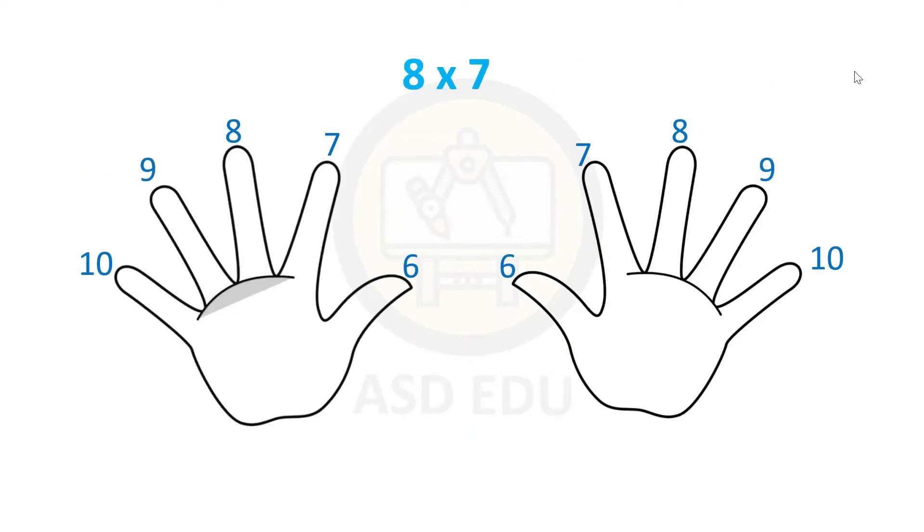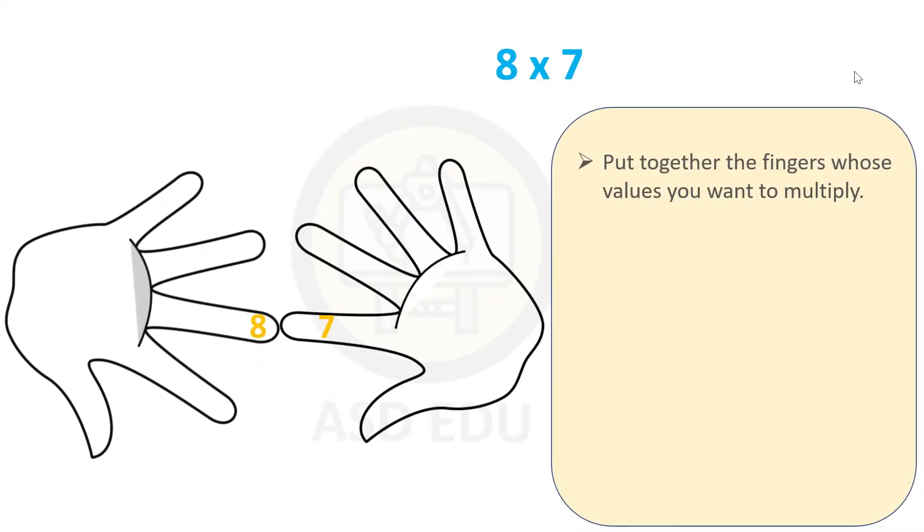Let's do the problem 8 times 7. Rotate your hands and put together the fingers whose values you want to multiply.